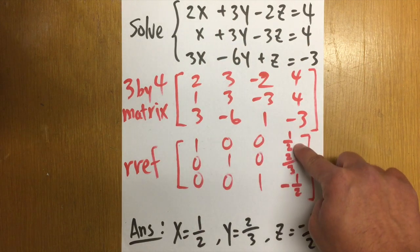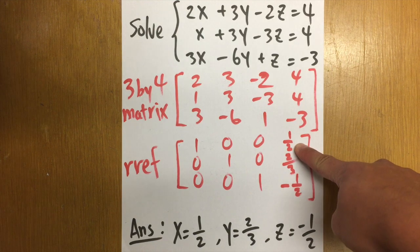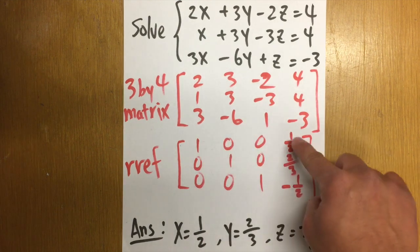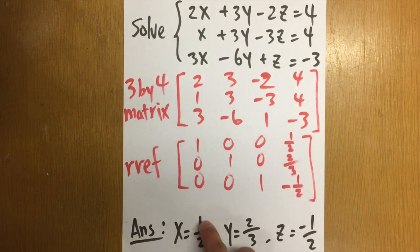This is the X column. We have 1 X, no Y, no Z. And this right here is 1 half. That means 1 X is equal to 1 half. So X is equal to 1 half.